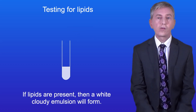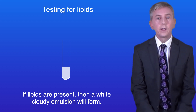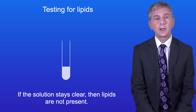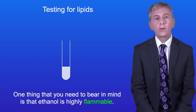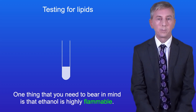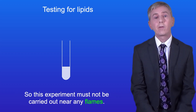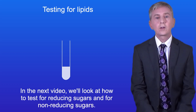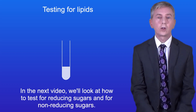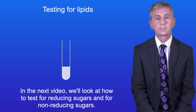If lipids are present then a white cloudy emulsion will form. If the solution stays clear then lipids are not present. Bear in mind that ethanol is highly flammable, so this experiment must not be carried out near any flames. In the next video we look at how to test for reducing sugars and for non-reducing sugars.